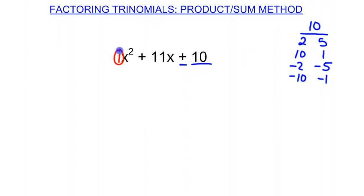Now we want to look at these combinations and see which of those add up to the middle term, the 11. So 2 plus 5 is 7, 10 plus 1 is 11. So this is going to be what we will use, our 10 and our 1. So now we factor, and because the variable is x, we're going to say x plus 10, and that is going to be multiplied by x plus 1. And that's our solution.